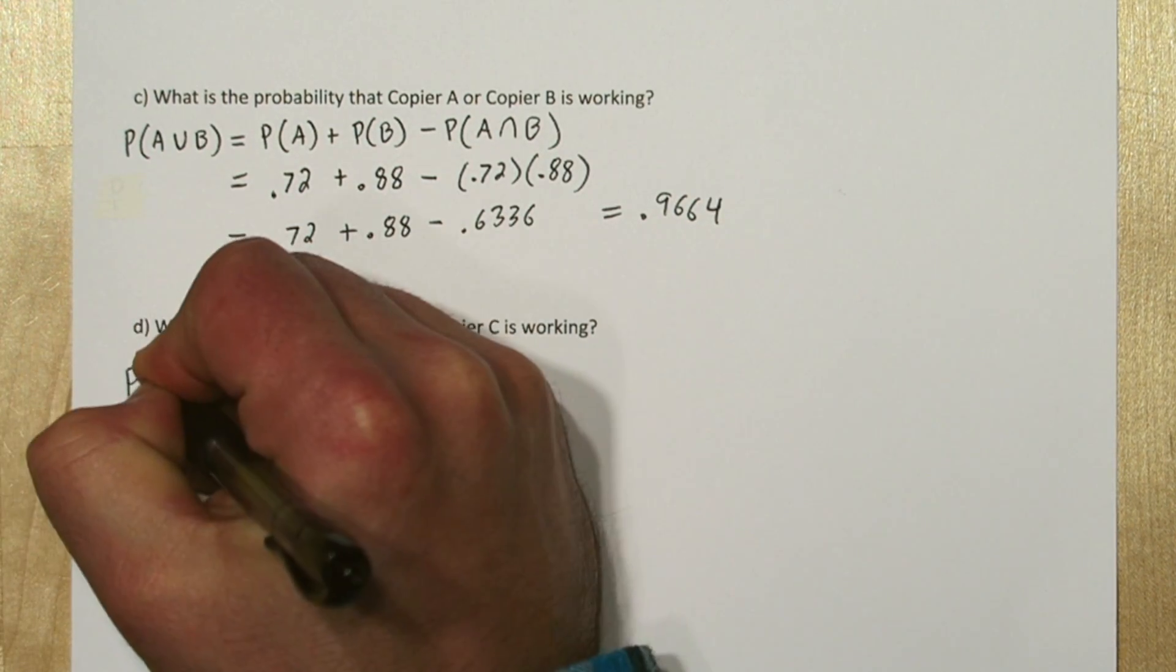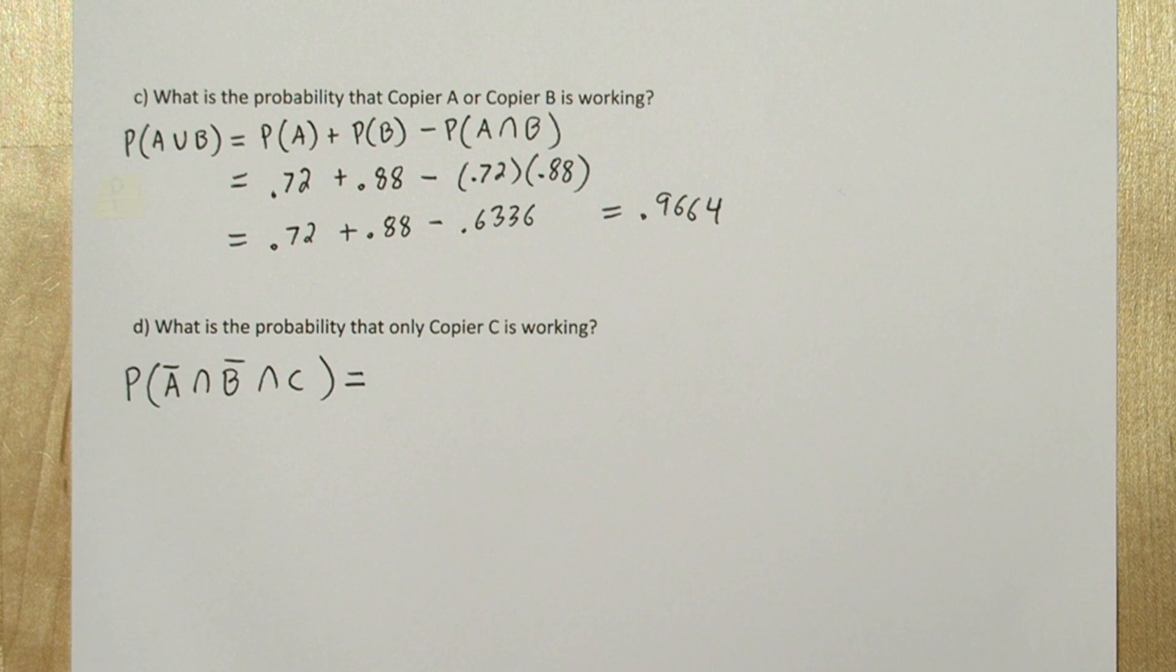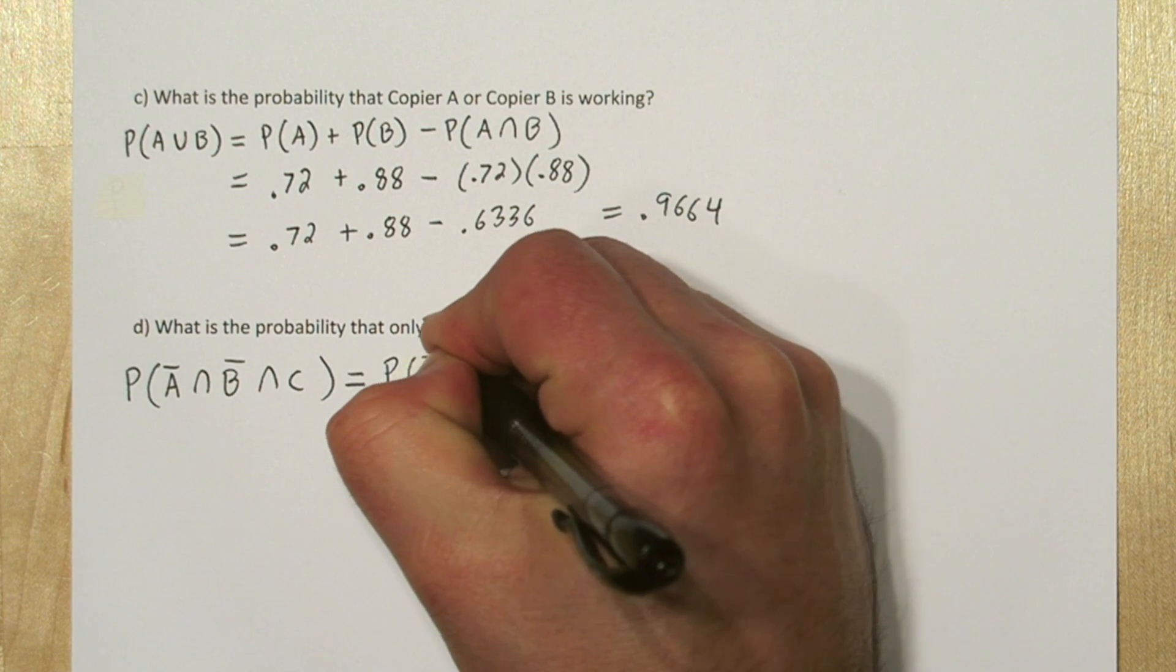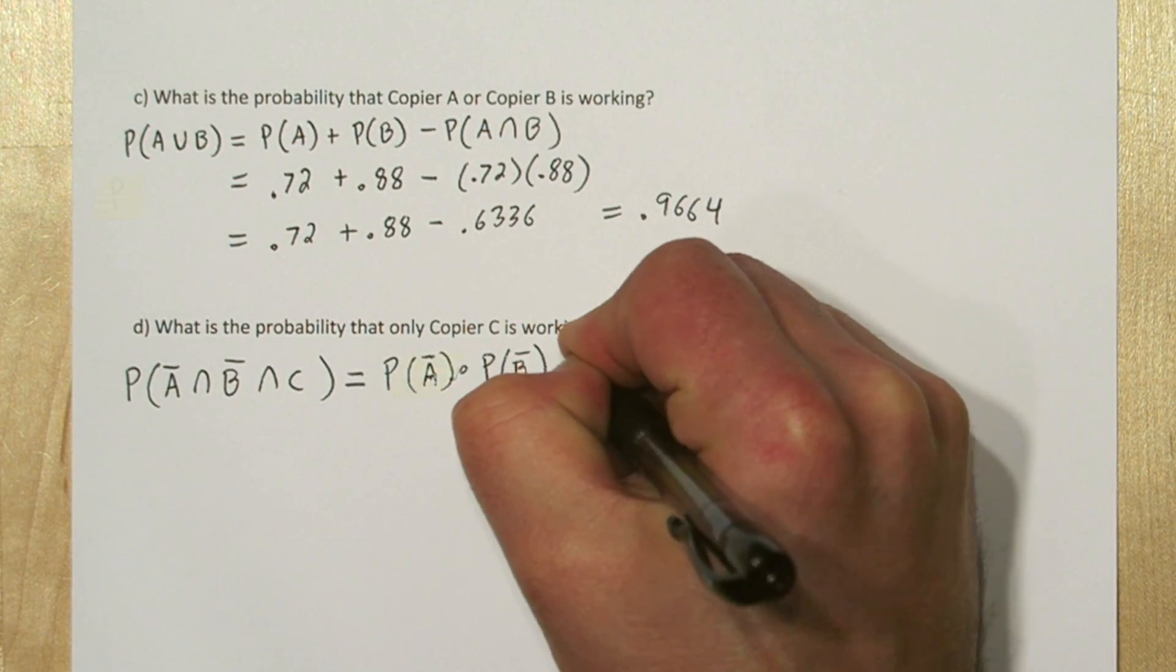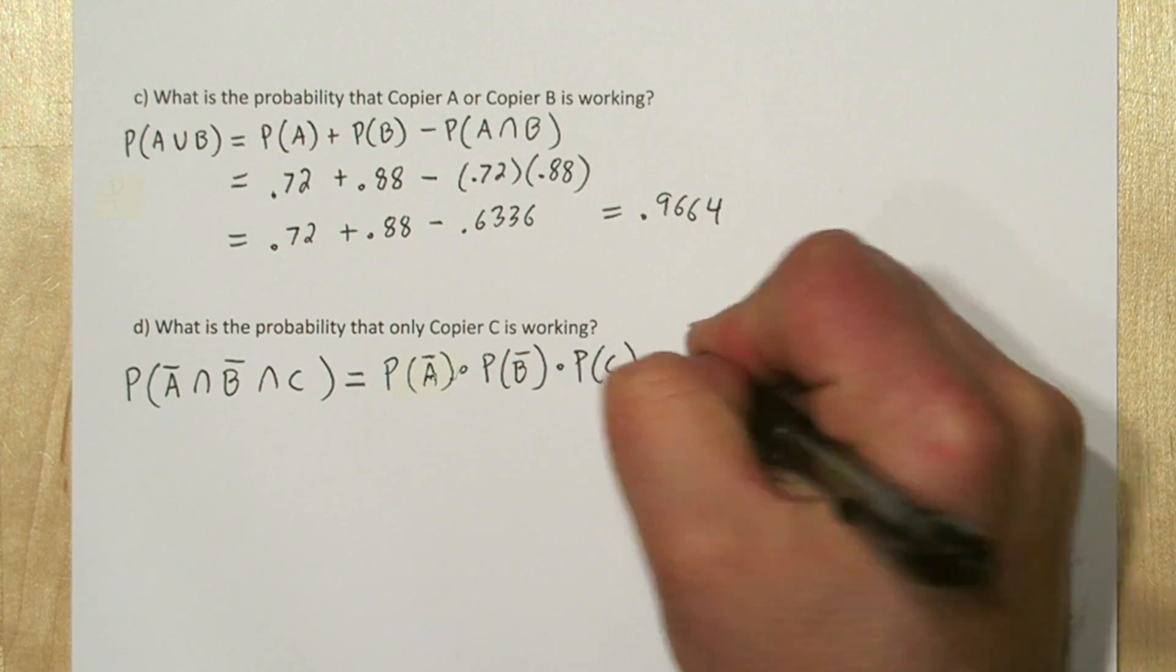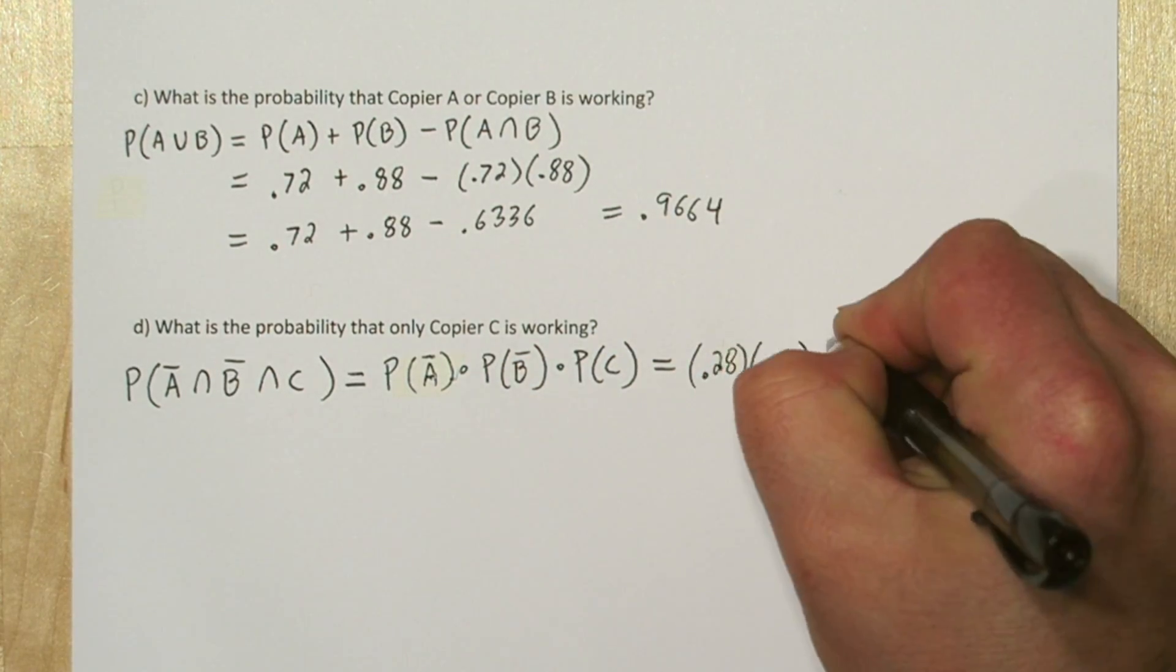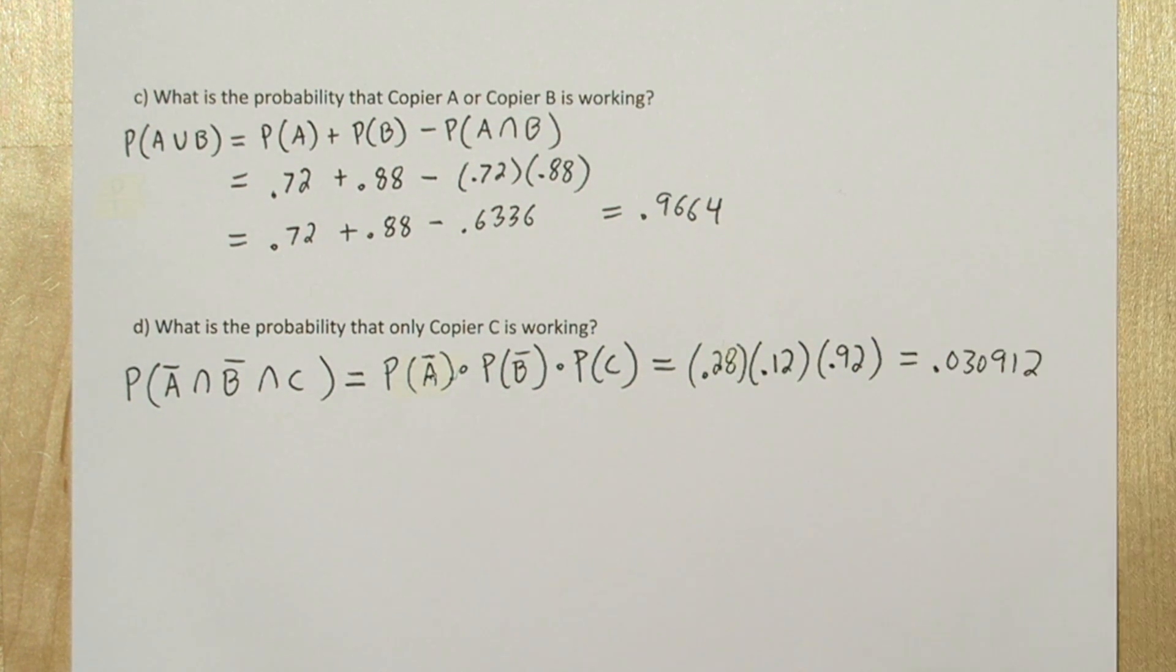We're going to find the probability that A is not working, and B is not working, and C is working. The multiplication rule for independent events tells us that this equals the probability of A not working times the probability of B not working times the probability of C working. So 0.28 times 0.12 times 0.92. The probability of only copier C working is 0.030912.